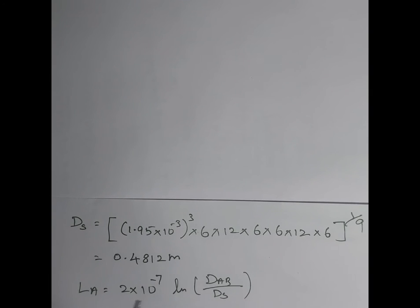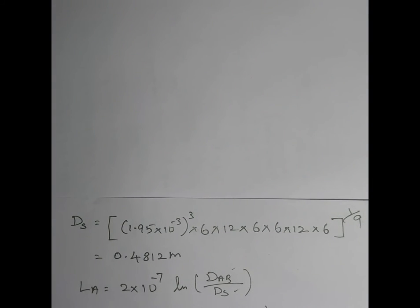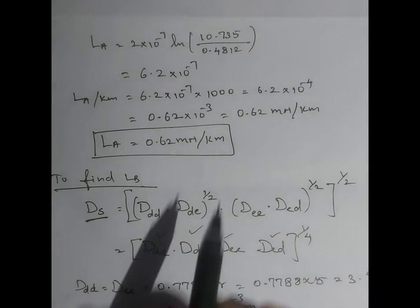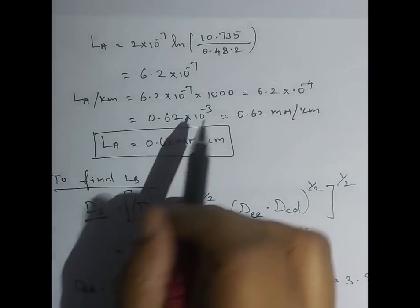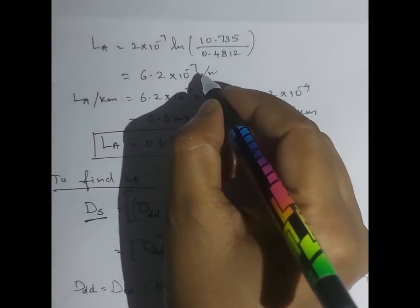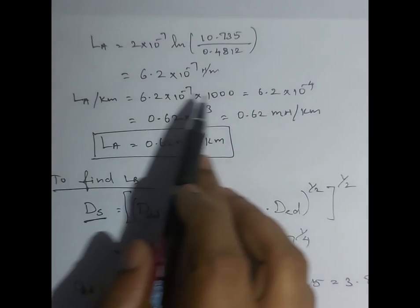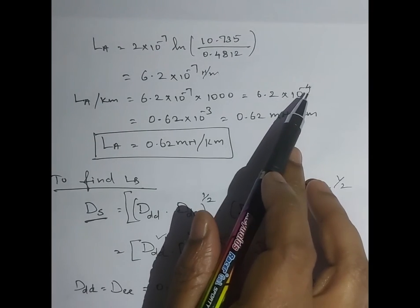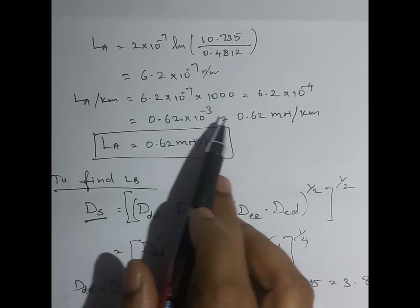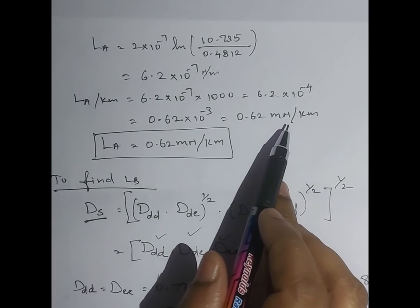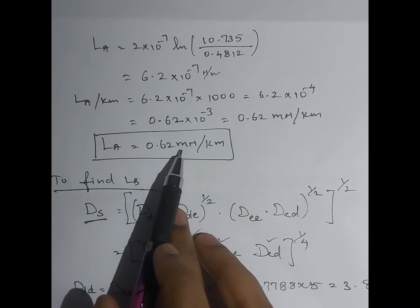Inductance of phase A: La = 2 × 10⁻⁷ ln(Dab/Ds). Substituting Dab = 10.735 m and Ds = 0.4812 m, we get La = 6.2 × 10⁻⁷ henry per meter. Converting to per kilometer: La = 6.2 × 10⁻⁴ H/km = 0.62 × 10⁻³ H/km = 0.62 mH/km.